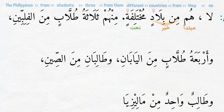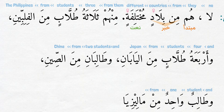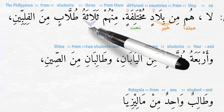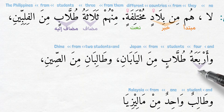منهم ثلاثة طلاب من الفلبين — from them, three students are from the Philippines. وأربعة طلاب من اليابان — and four students are from Japan. وطالبان من الصين — and two students are from China. وطالب واحد من ماليزيا — and one student is from Malaysia. Notice the counts of طلاب with three and above are coming as an إضافة combination, where عدد is مضاف and معدود is مضاف إليه.